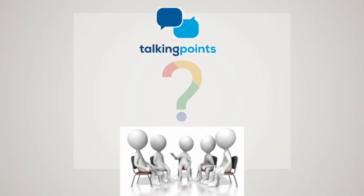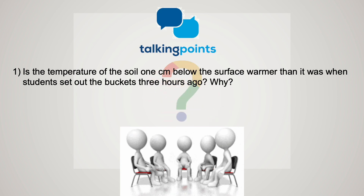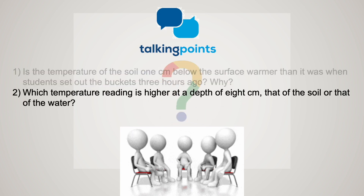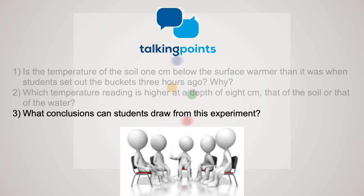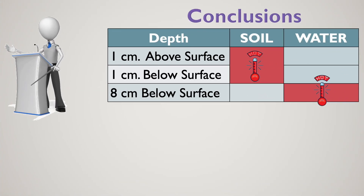Back in the classroom, get students to discuss the following talking points: Is the temperature in the soil one centimeter below the surface warmer than when the students set out the buckets three hours ago? Why? Which temperature reading is higher at a depth of eight centimeters? Why? What other conclusions can students draw from this experiment?